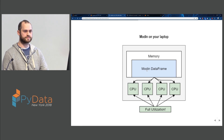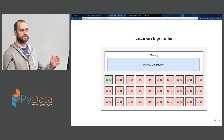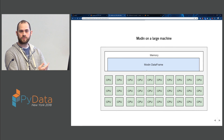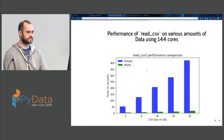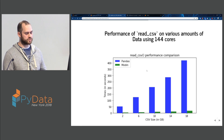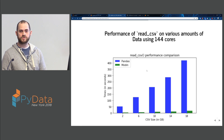On a large machine, this becomes much more evident. Pandas is still only using one core, but Modin can use all of the cores. I'm fortunate enough to have access to a machine that has 144 cores. For read_csv, we see linear scaling in Pandas — but that's because it's still only using one core. With Modin, 2 gigabytes takes about 2 seconds and 18 gigabytes takes less than 18 seconds, so we get more than a gigabyte per second of read throughput on this machine.